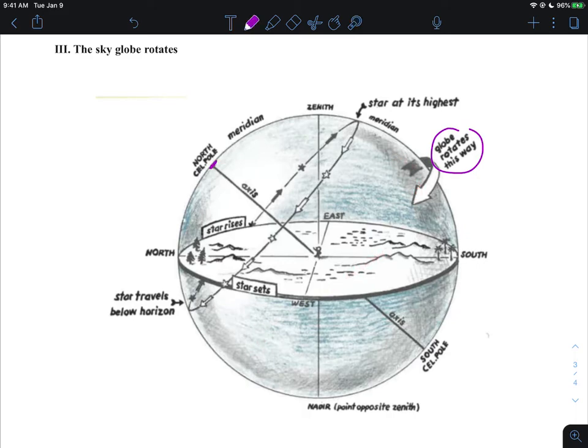The next thing that we see here is the pole star that remains fixed right there in the sky, doesn't move, right there, stays there.